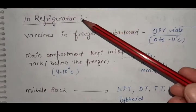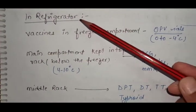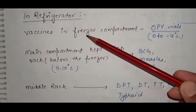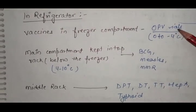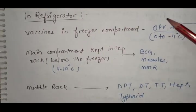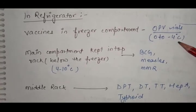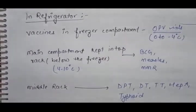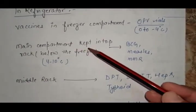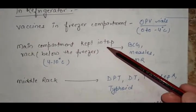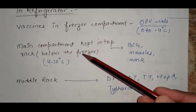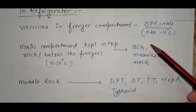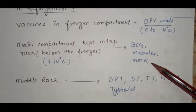Now we will see how to store vaccines in refrigerator. Vaccines kept in the freezer compartment are OPV vials at 0 to minus 4 degrees Celsius. In the main compartment top rack below the freezer, where temperature is 4 to 10 degrees Celsius, keep BCG, measles and MMR.